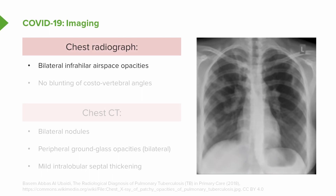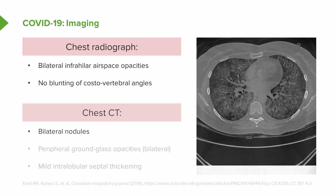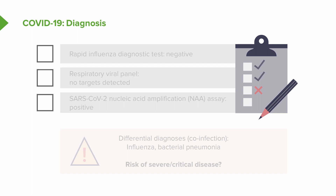Chest radiograph was performed first for speed and showed typical non-specific bilateral infrahilar airspace opacities, which could be seen with any viral process or non-specific atelectatic changes; no increased fluid, as costophrenic angles are clear. The chest CT scan demonstrated bilateral nodules, peripheral ground-glass opacities throughout the lung fields, and mild intralobular septal thickening — all findings seen in COVID-19 disease and also significantly in acute respiratory distress syndrome caused by a variety of pathogens.